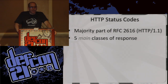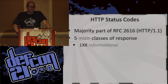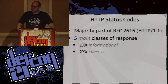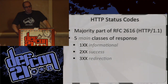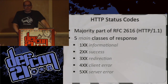There's an RFC — I'm sure everyone here has read that. So there are five main classes of responses. You get the 100s which are the informational stuff — you don't get to see those very much. You get the 200s which is most of the redirect stuff. You get the 400s which means you fucked up. You get the 500s which means they fucked up. Simple as that.